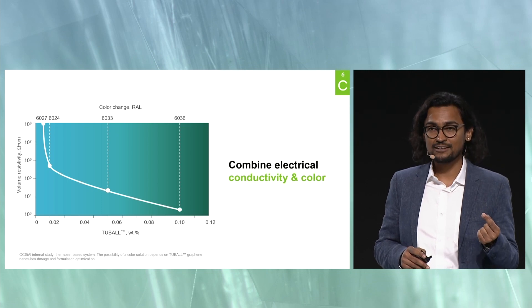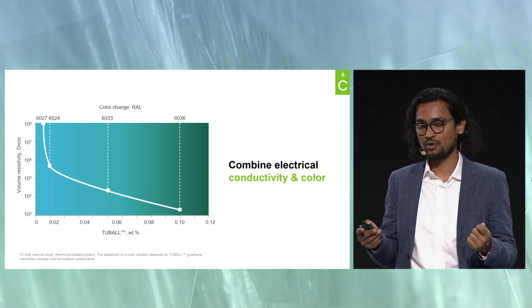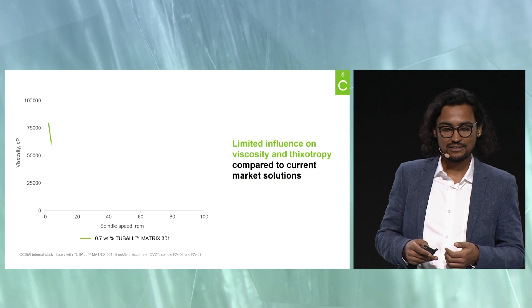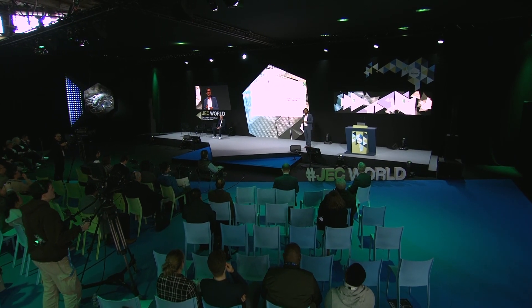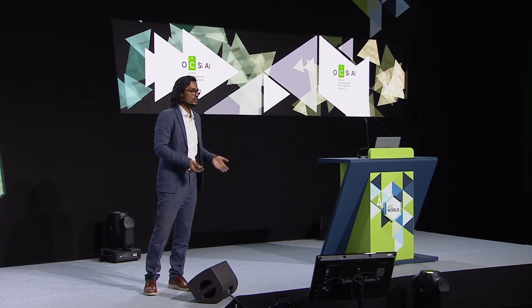Whether your composite is used in northern Europe or a tropical location, it will show the same level of conductivity — very important when designing composite parts for all regions and seasons. Since you add such a low amount of nanotube, there will be only a slight tint, and the end part could still be colored rather than black. It also has very limited effect on viscosity and thixotropic properties, so you do not have to significantly change your formulation or mixing method. We currently have products compatible with hand layup, SMC, filament winding, and pultrusion manufacturing setups.